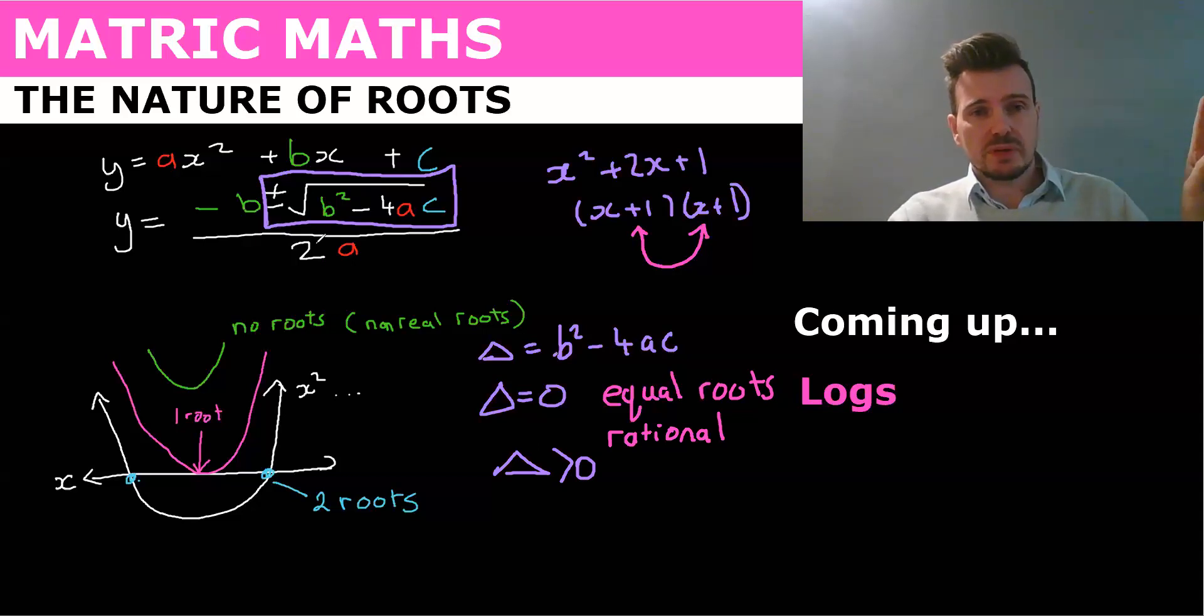And they're going to be either rational or irrational depending on if this b squared minus 4 is a perfect square. Because if say this was 25, the square root of 25 is 5 and so we'd get a nice fraction, but if it was 17 we'd get root 17 which is irrational.